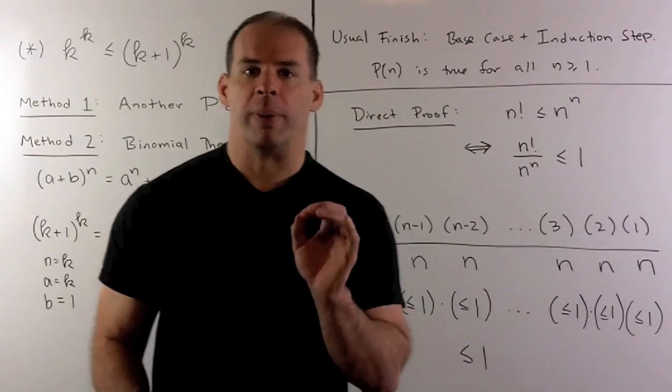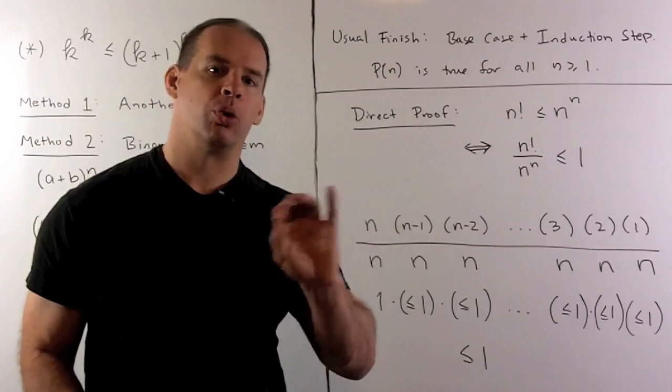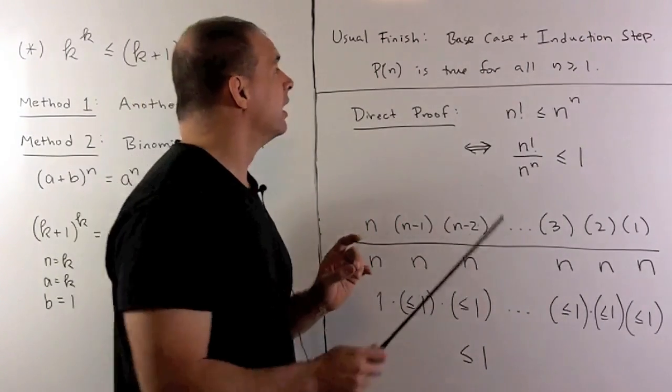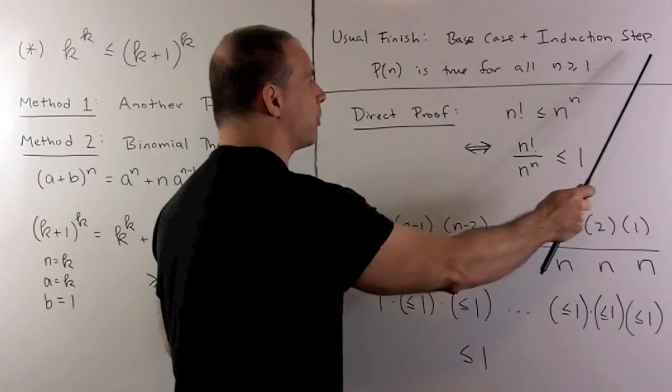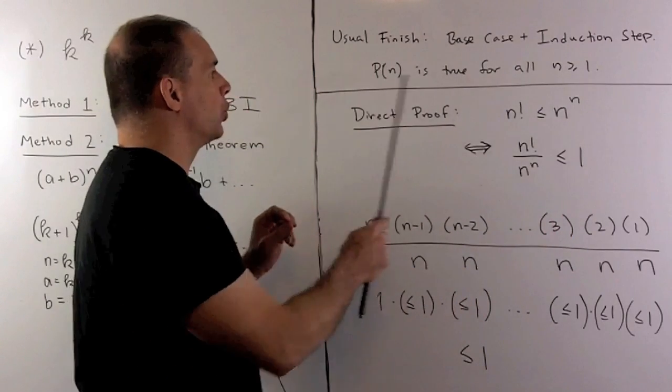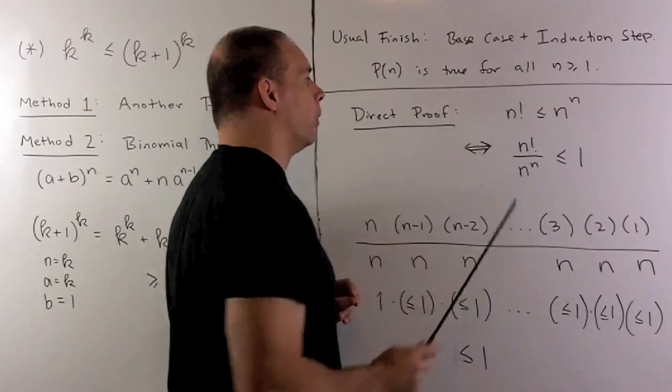Now, since we have a proof by induction, we just give our proof formal closure by saying, since the base case and the induction step are true, our statement is true for all n greater than or equal to 1.